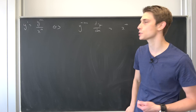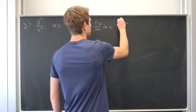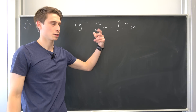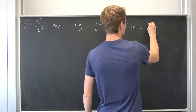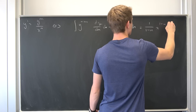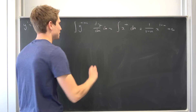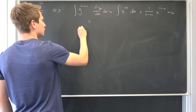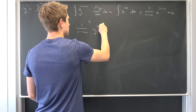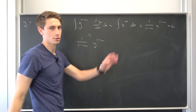Just integrate both sides with respect to x — you can introduce a proper substitution if you want. On the right side, we end up with 1 over (1 minus n) times x to the (1 minus n)th power plus some arbitrary constant c. On the left side, it evaluates to 1 over (1 minus m) times y to the (1 minus n)th power plus some arbitrary constant c.